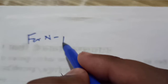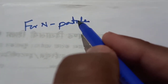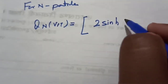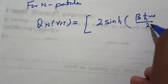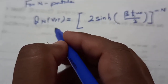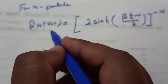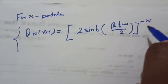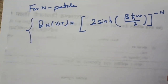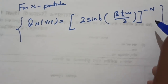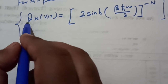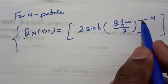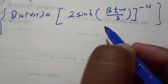For N oscillators, the total partition function Q_N(V,T) equals (2 sinh(beta h-bar omega over 2)) to the power of minus N. This is a crucial result for the quantum harmonic oscillator, whose eigenvalues are (n + 1/2) h-bar omega. We now use this to calculate thermodynamic quantities.